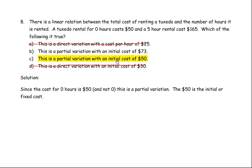So it is a partial variation, and the initial cost would be $50 because that is what we are told. The $73 is not correct because we are told the initial cost is $50 — $73 might be some other amount like the cost per hour, but we are not asked to find that. This tells you it is a partial variation because no time still costs something, and that is the initial cost — the fixed amount. That is why C is the correct answer for question number 8.